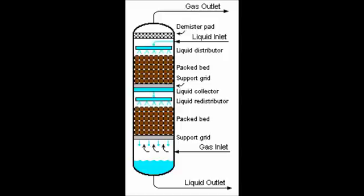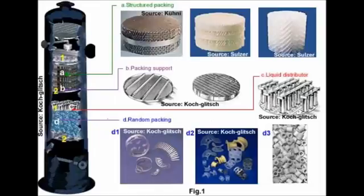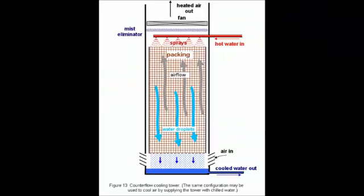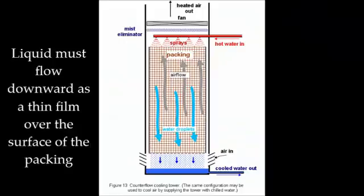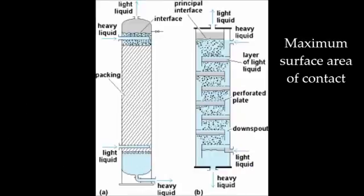The packing promotes good contact between the phases by dividing the two feed streams into many parallel interconnected paths. Ideally, you would like the liquid to flow downward as a thin film over the surface of the packing. This would give the maximum surface area of contact between the gas and liquid.